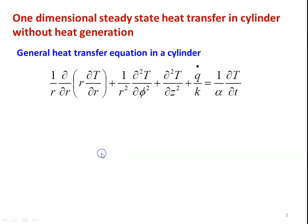The general heat conduction equation for a cylindrical coordinate system is: 1/r · ∂/∂r(r · ∂T/∂r) + (1/r²) · ∂²T/∂φ² + ∂²T/∂z² + q̇/k = (1/α) · ∂T/∂t.